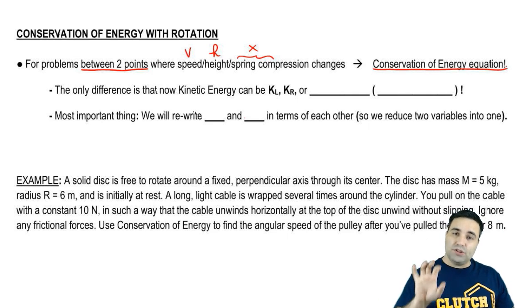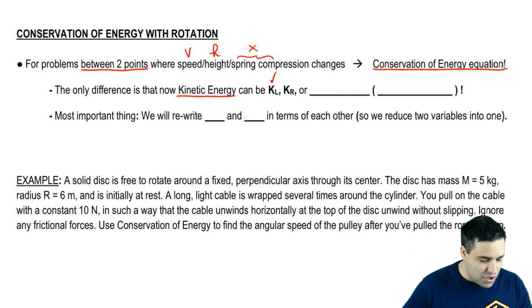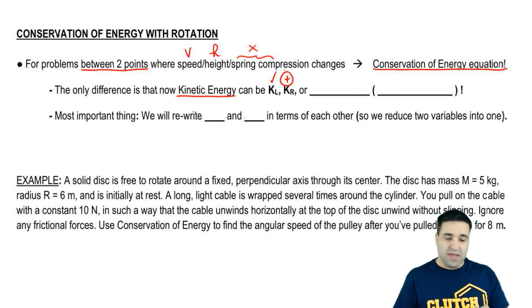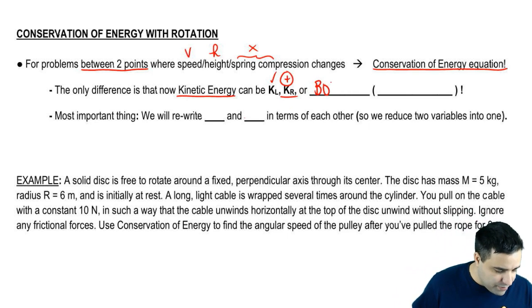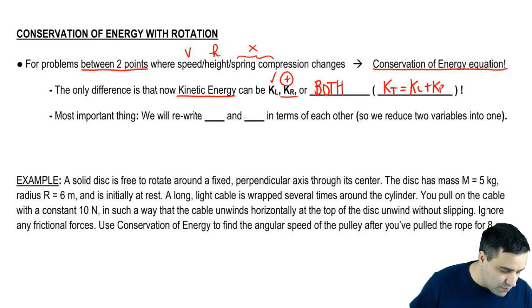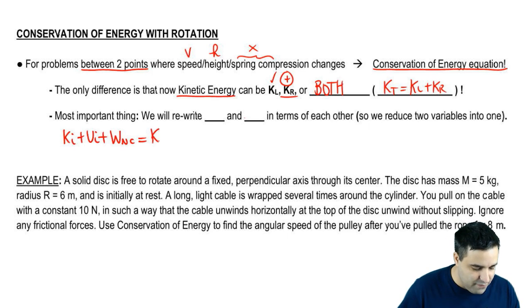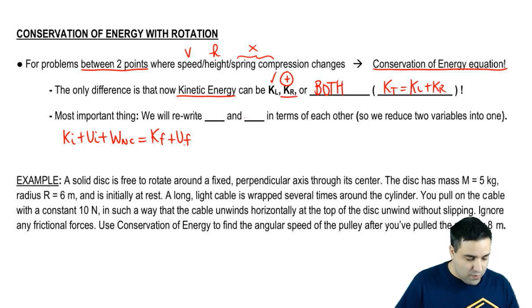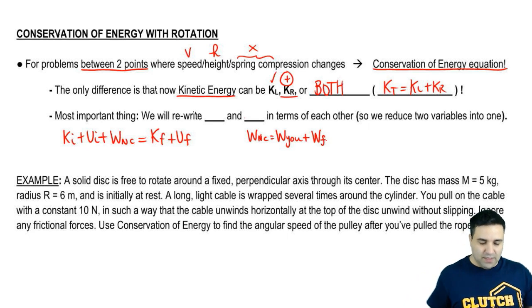We're going to apply that now to rotation questions. The only difference is that in rotation, your kinetic energy can be not only linear but also rotational. So the new thing is that you could be spinning, or it could actually be both—your total kinetic energy is linear plus rotational. We're going to use the conservation of energy equation: K initial plus U initial plus work non-conservative equals K final plus U final. Work non-conservative is the work done by you, by some external force, plus the work done by friction if you have some.